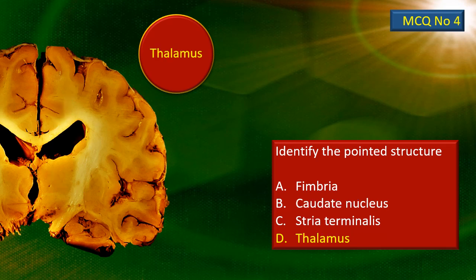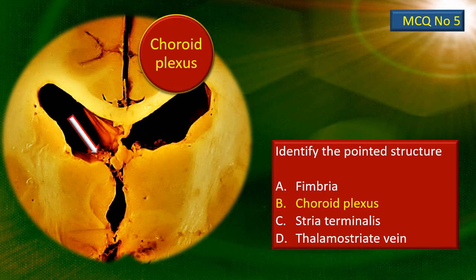MCQ number 4: the swelling — the elevation — that you see in the floor is just next to the fornix, so that has to be the thalamus. If the same arrow were a little more lateral, then it would have been the caudate nucleus. Last one: projecting through the choroid fissure is the choroid plexus, very clearly seen in this particular photograph.